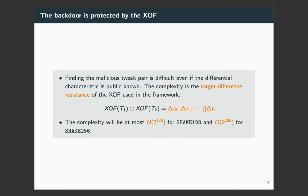Now, I will show that the backdoor is protected by the XOF. Assume that even if the embedded differential characteristic is publicly known, that is the plaintext difference, the internal state differences, and the sub-tweak differences are known, finding the malicious tweak pair is still difficult. Actually, this task is equivalent to solving the target difference problem of the XOF, as shown in this equation. Given the string of the sub-tweak differences, the target of the attacker is to solve the equation to find the malicious tweak pair. And if the length of the sub-tweak string is long enough, the complexity can be 2 to the power of 128 for SHAKE-128 and 2 to the power of 256 for SHAKE-256.